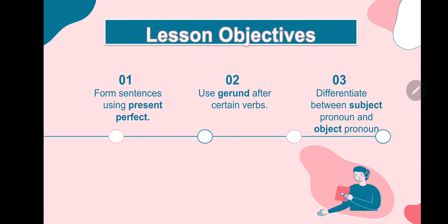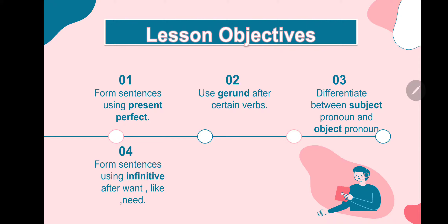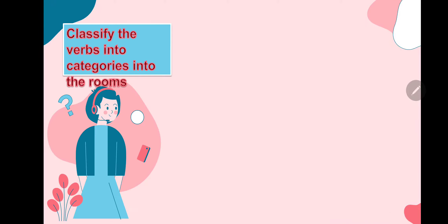Differentiate between subject pronoun and object pronoun. Form sentences using infinitive after want, like, and need. Use two-word verbs as imperative — to identify request words as imperative. Start to classify these verbs into categories.